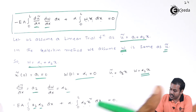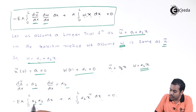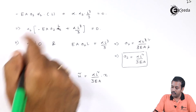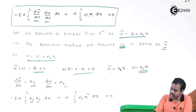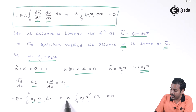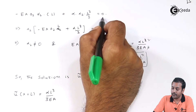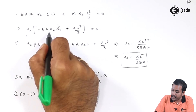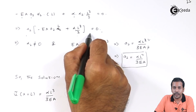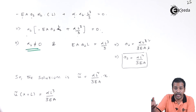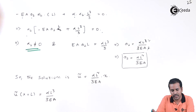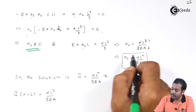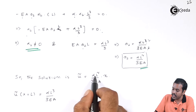Integrating: a₂ and α₂ are constants, so the first integral gives EA·α₂·a₂·L. The second term gives α·α₂·x³/3 evaluated from 0 to L, which is α·α₂·L³/3. Taking α₂ as common: α₂ × (−EA·a₂·L + α·L³/3) = 0. Since α₂ cannot be zero (that gives a trivial solution), we solve: a₂ = αL²/(3EA). Therefore, the solution is u-tilde = αL²/(3EA) · x, and at x = L, u = αL³/(3EA).